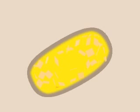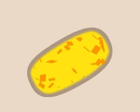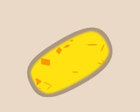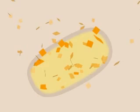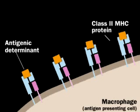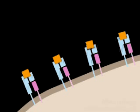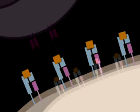Class II MHC proteins bind fragments of the antigen and transport them to the cell surface for display. A cell displaying such foreign antigens on its MHC proteins is called an antigen-presenting cell.